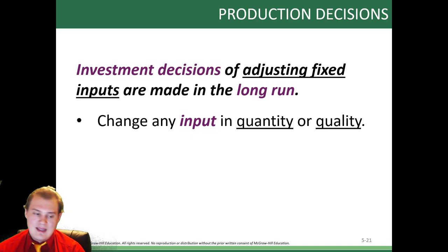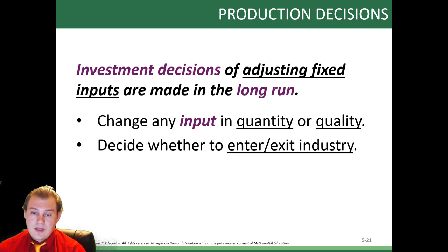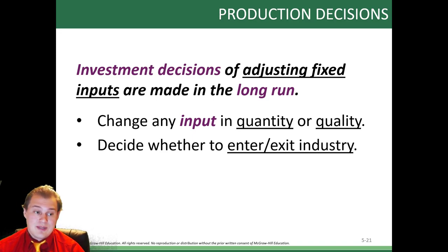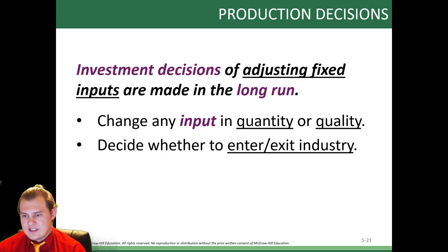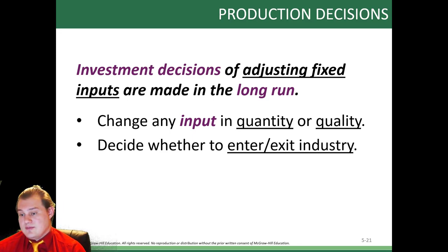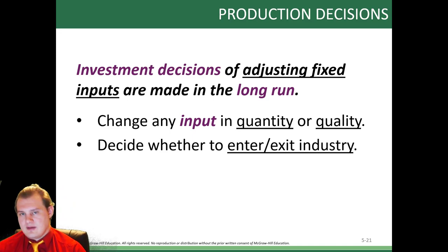Investment decisions also include deciding whether to enter or exit an industry — you might completely get out and go into a different one. You could be making soda and decide to go into cell phones. Usually you want to stick with your technological skills, but many companies enter different industries. Take Sony, for example: they have Sony Pictures and they're an electronics company. When you get these big conglomerate companies, they might slowly start to exit one industry and focus more power in another part that's doing well.